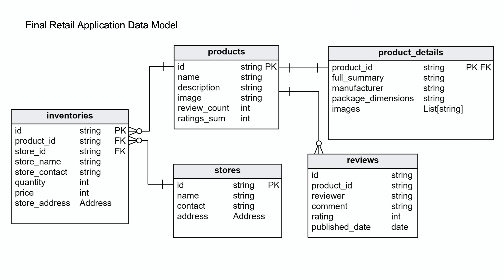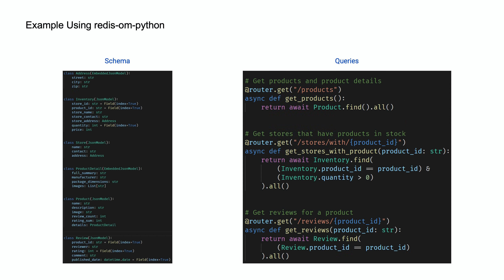Here is the final application data model schema — an entity diagram similar to what you'd see in a relational database. You'll notice that in our inventory and store documents we have nested address objects — something you can't embed in SQL but can in Redis JSON. In our product details we have our list of images, and we have review_count and rating_sum. On the left is a sample schema with classes set up using EmbeddedJsonModel and JsonModel, with a few fields indexed, and on the right are our queries.